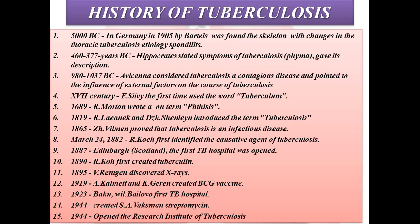Worldwide, TB is one of the top 10 causes of death. In 2018, tuberculosis caused an estimated 1.7 million deaths, and the best estimate is that 10 million people developed tuberculosis. Of these, 5.8 million were men, 3.2 million were women, and about 1 million were children. Two-thirds of cases were in eight countries, and 90% of cases were adults aged more than 15 years.